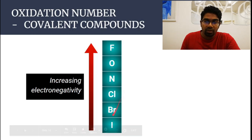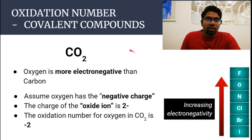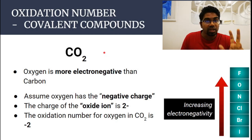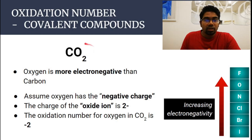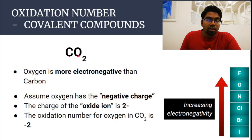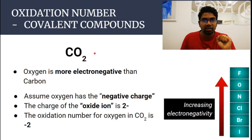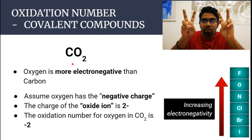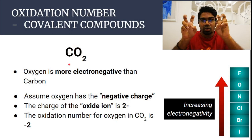Let's look at carbon dioxide. Carbon dioxide is a covalent compound — it does not consist of any ions. However, when we want to assign an oxidation number, we treat it as an ionic compound. Please do not get confused — it is not really an ionic compound, but we treat it as if it is. Oxygen is the more electronegative element here — it's the second most electronegative — so we assume oxygen gains the electrons and carbon loses the electrons.